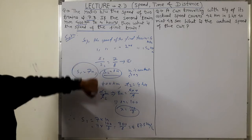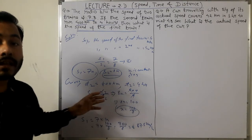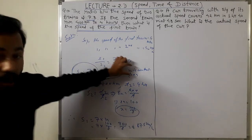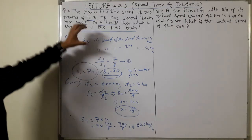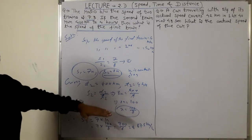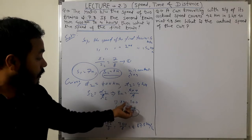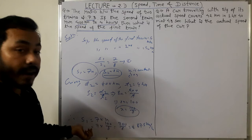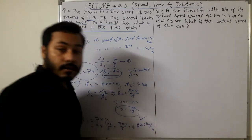To recap: S1 by S2 equals 7 by 8 was given. Using the ratio concept, S1 equals 7x and S2 equals 8x for some constant x greater than zero. Since the second train covers 400 kilometers in 4 hours, speed equals distance divided by time, giving 8x equals 100, so x equals 100 by 8. Therefore S1 equals 7x equals 700 by 8, which simplifies to 87.5 km/h. You can take a screenshot before I erase this.